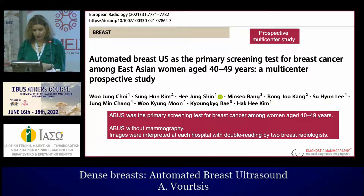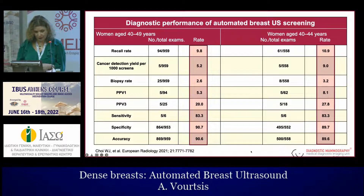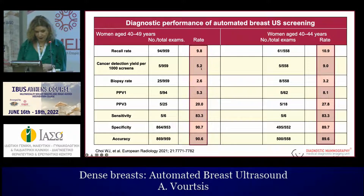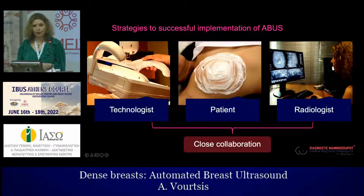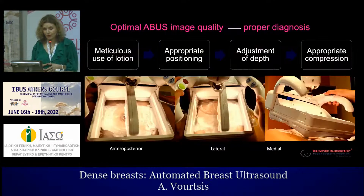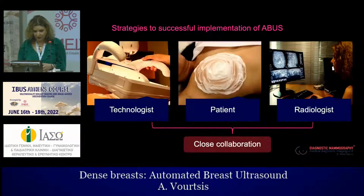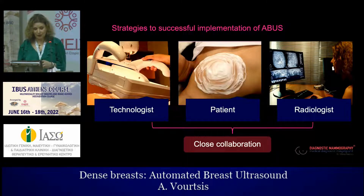Another study from Korea — a prospective multicenter study — where ABUS was the primary screening test for breast cancer among women aged 40 to 49 years old. They reached high sensitivity, high accuracy, and a detection rate of 5.2 cancers per 1,000 women screened. Successful implementation requires close collaboration between the patient, technologists, and the physician.